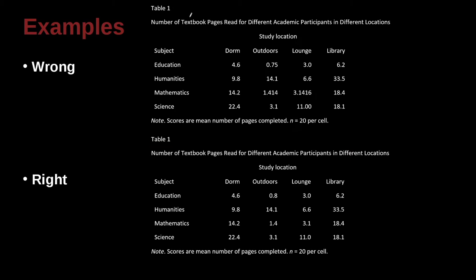Okay, let's take a look at another example here. Number of textbook pages read for different academic participants in different locations. So we have our subjects here. We have our study location, which is going to be dorm, outdoors, lounge, and library. This is looking pretty good actually. Study location, but we have different locations. That's clear.